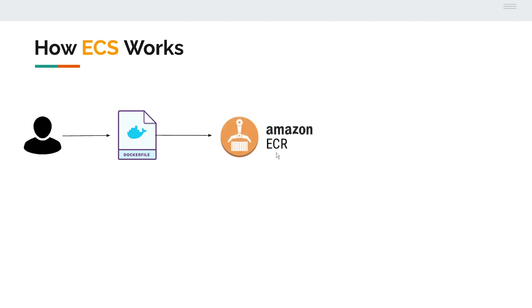ECR is where your images are hosted, and they'll be launched onto your ECS containers. You can key your applications by name. One neat thing about ECR is that it keeps a history of all the images you've built for that application over time, so you can quickly roll back to a previous version if something is wrong with a new image you just built.